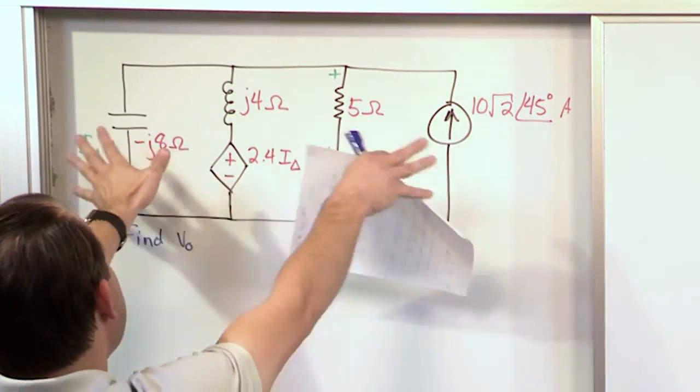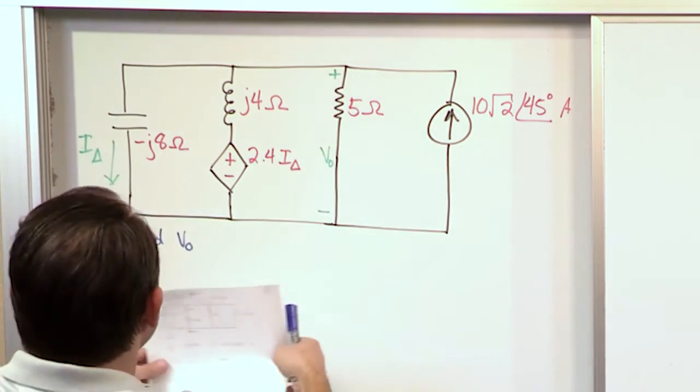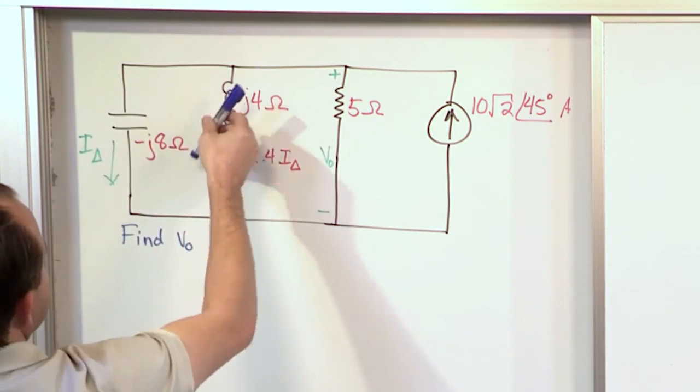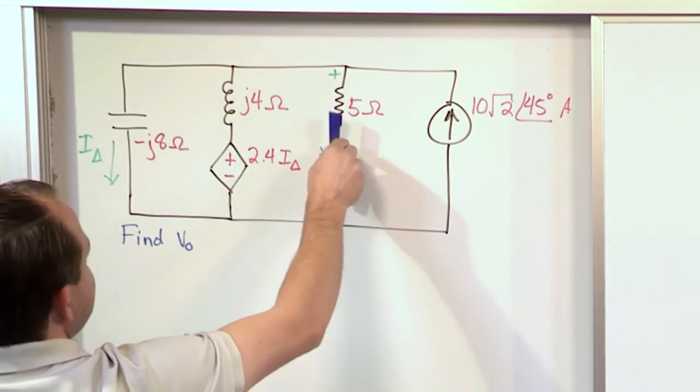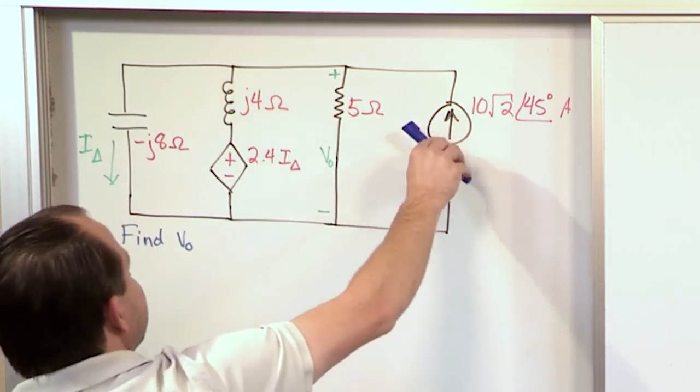So really everything in the top is all connected together. It's all drawn out in a square fashion to make it easy to read. But really, this thing is connected to one point. This is connected to the same point. This is connected to the same point. And this is connected to the same point.